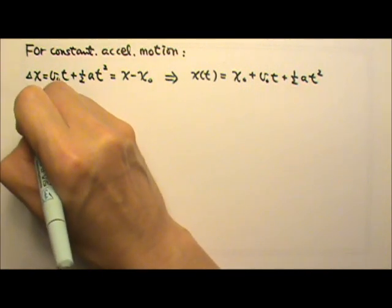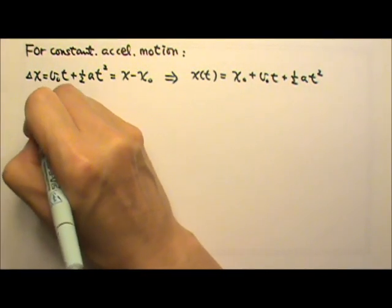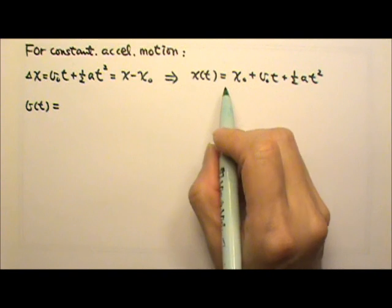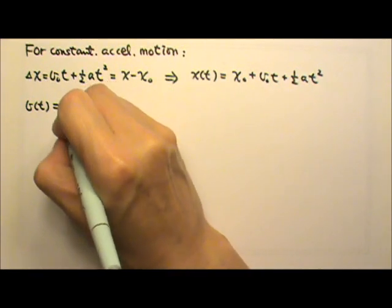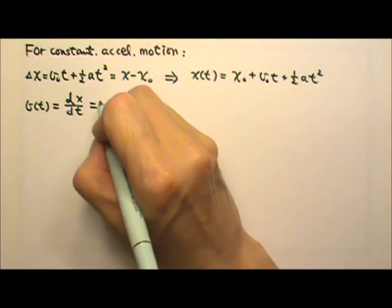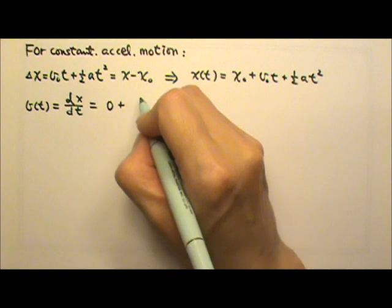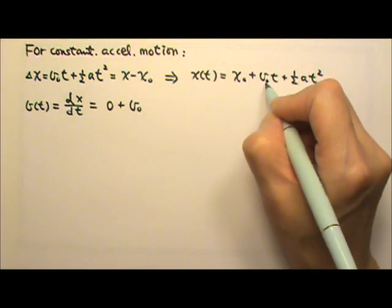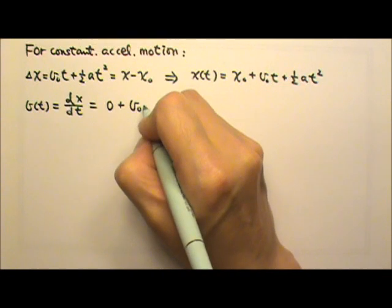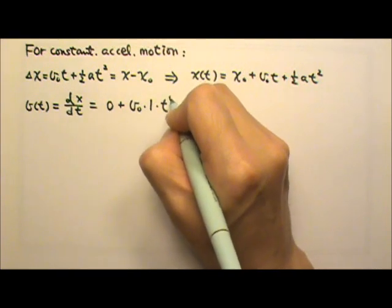If we want to find the velocity as a function of time, we just have to take the time derivative of the position. The initial position x₀ is a constant, so when we take the derivative we get zero. V₀ is a constant coefficient — the initial velocity is a constant — times t to the first degree, so times one. Then we lose one degree of power, getting t to the zeroth.